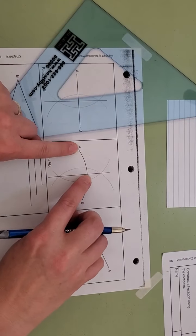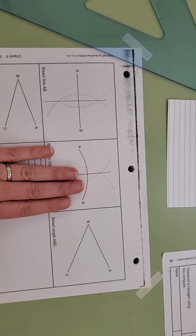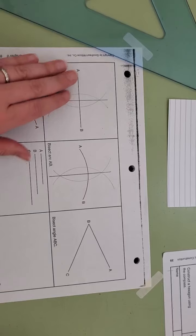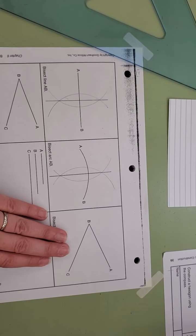This distance is the same as this distance. So that's a really good and easy trick in order to bisect a line or an arc. But when it comes to an angle, there's got to be a couple more steps.